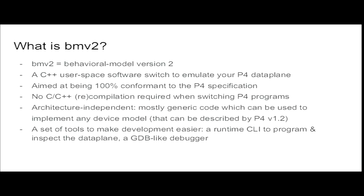Instead of having auto-generated C code based on the P4 program, BMV2 loads your P4 program when it starts so you don't have to recompile anything when you change your P4 program. BMV2 is a C++ user-space software switch which emulates the P4 data plane. It's aimed at being 100% conformant to the P4 specification — an important point, because in the P4 spec you can do arbitrary arithmetic on fields and metadata, and you have stateful memories.